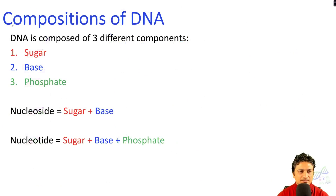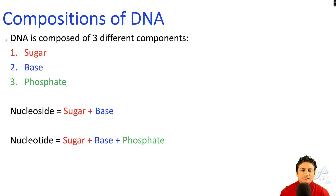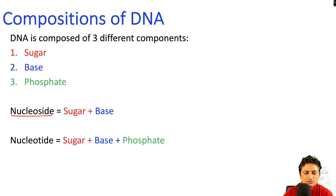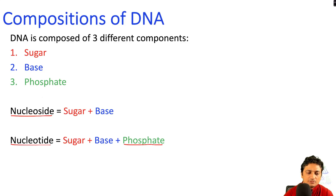Let's start with the different compositions of DNA. DNA is composed of three different components: sugar, base, and phosphate. A nucleoside is a combination of sugar and a base, and when we add a phosphate group to a nucleoside it becomes a nucleotide. Therefore a nucleotide has all three components: sugar, base, and phosphate.